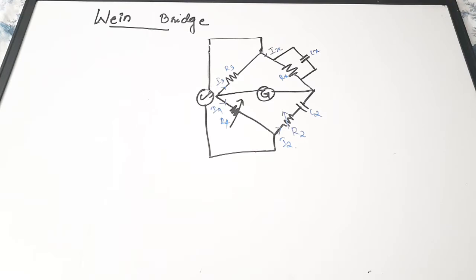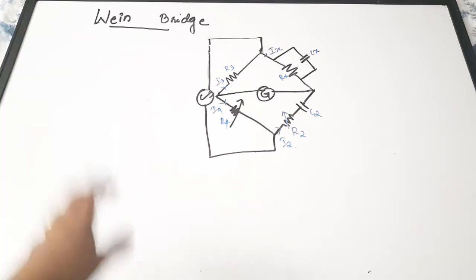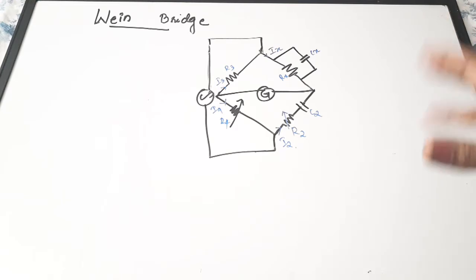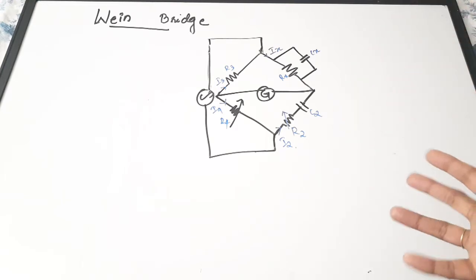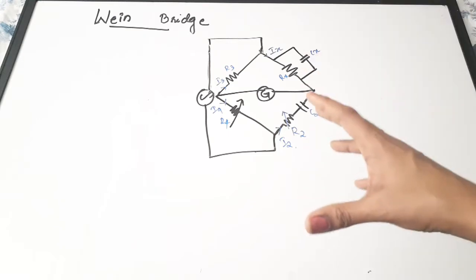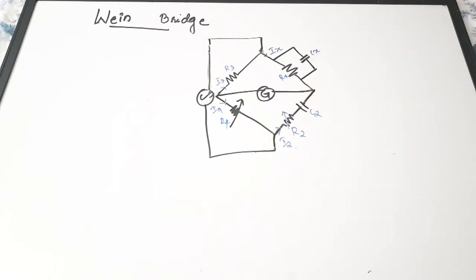The topic we are going to discuss today is the Wien Bridge. We were discussing various AC bridges in the electronic instrumentation and measurement subject. In this video we will be discussing about the Wien Bridge. This bridge, like all other types of bridges, involves balancing — we find some unknown component's value, whether it is resistance, inductance, or capacitance, by applying the balancing equation.